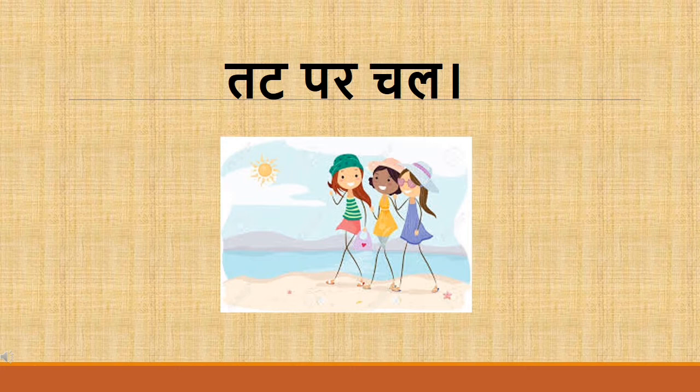Let's read the first sentence from page number 18. What is the meaning of 'tat par chal'? Children, here you can see after every word there is a space, so we are going to keep one finger space after every word. And at the end of the sentence, we put a full stop. Hindi mein full stop ko hum kya kehte hain? Purna viram.